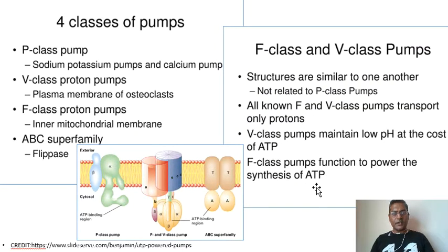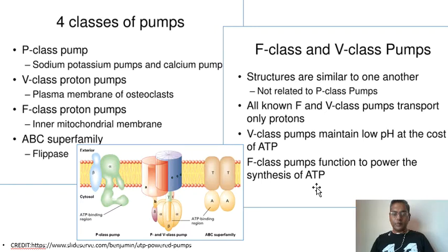We have listed out four classes of pumps. Substances that are transported across the cell membrane by primary active transport include metal ions like sodium, potassium, magnesium, calcium, and so on. These charged particles require ion pumps or ion channels to cross membranes and distribute through the body.